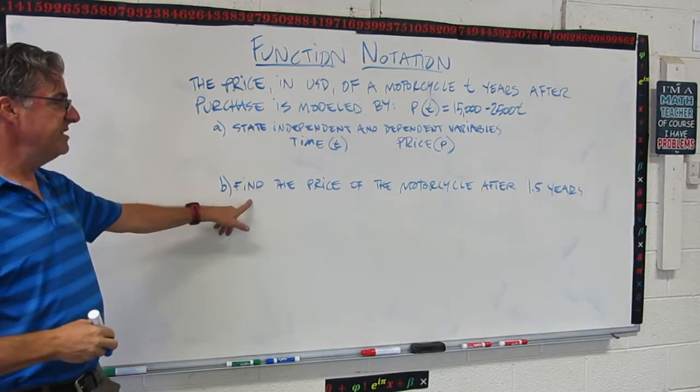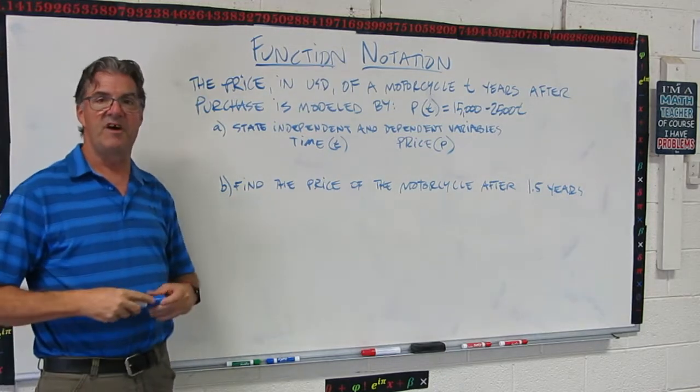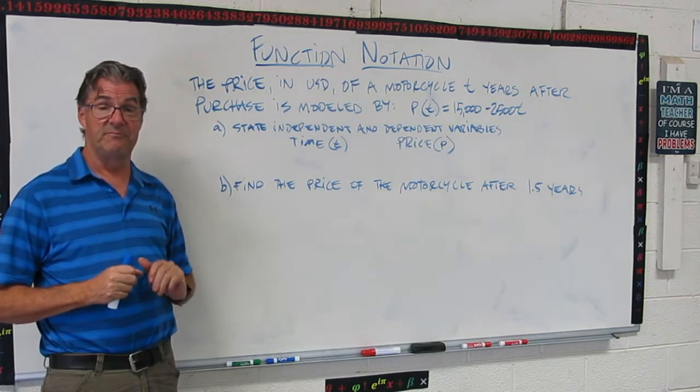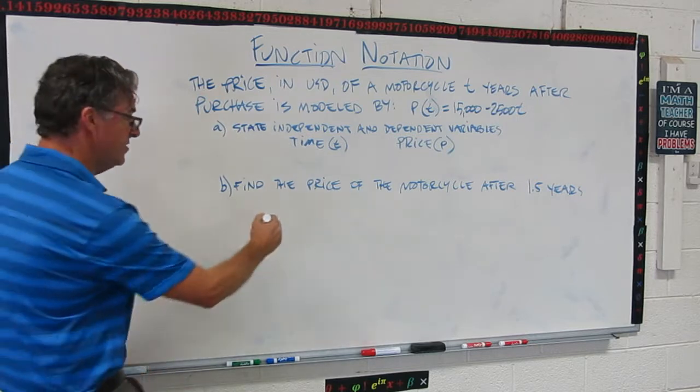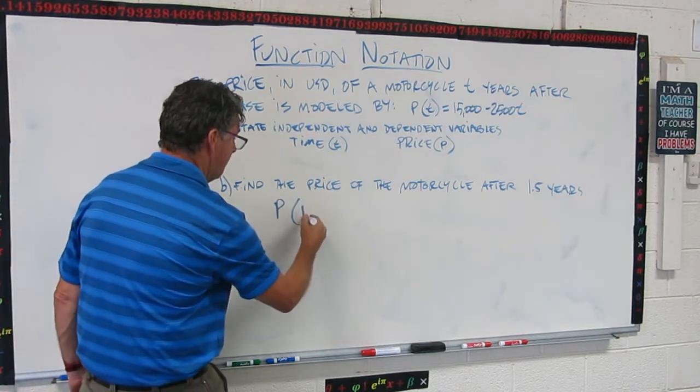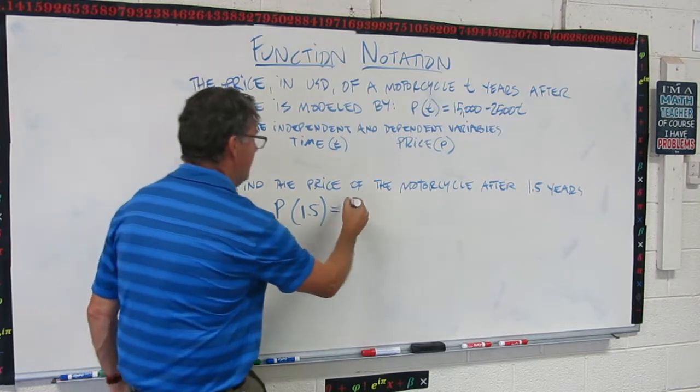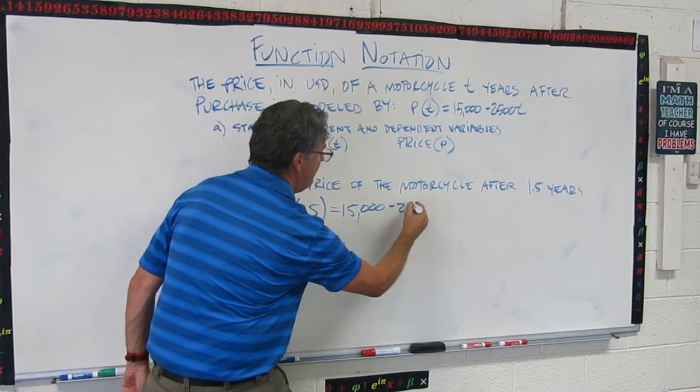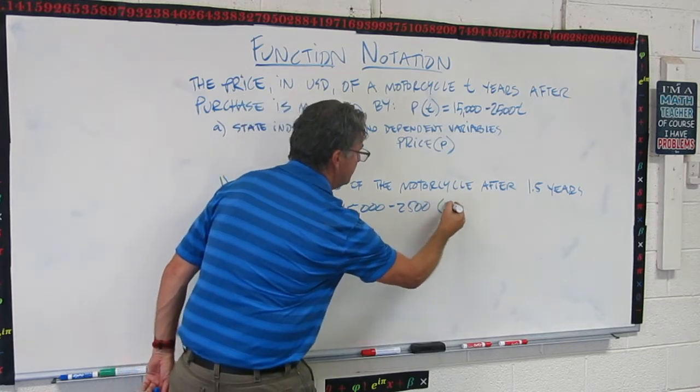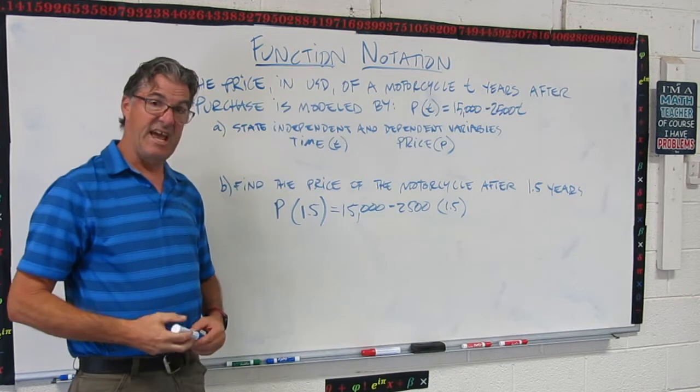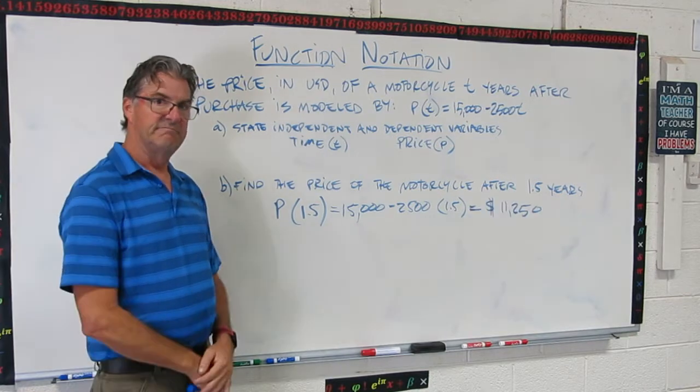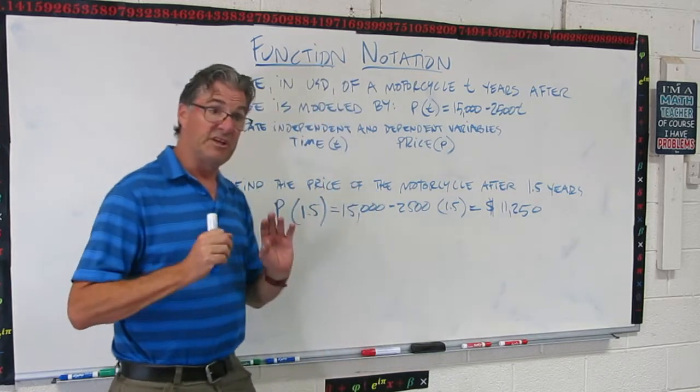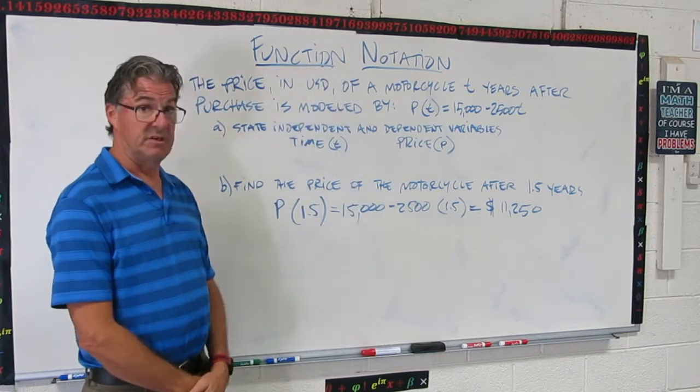Now the second question is find the price of the motorcycle after 1.5 years. So what I want you to do is think about that, pause the video, and do that math. Let's see how you did. So here's how we would write this in function notation. p(1.5) = 15,000 - 2,500 × 1.5. So the rest of it is a straightforward calculation. So that calculation ends up being $11,250. So if you didn't get that, try it again. Make sure you can get that result.